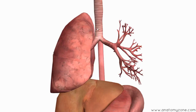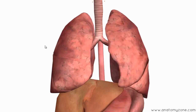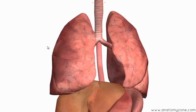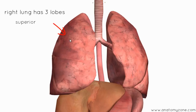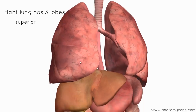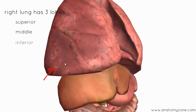Just remember that the trachea divides into the right and left main bronchi, which divide into secondary bronchi, which divide into tertiary bronchi. The secondary bronchi are called lobar bronchi because they supply the lobes of the lung with air. The right lung has three lobes: a superior lobe, a middle lobe, and an inferior lobe.